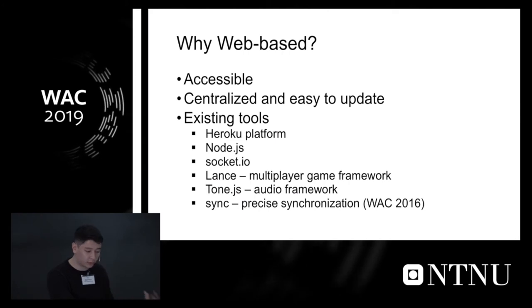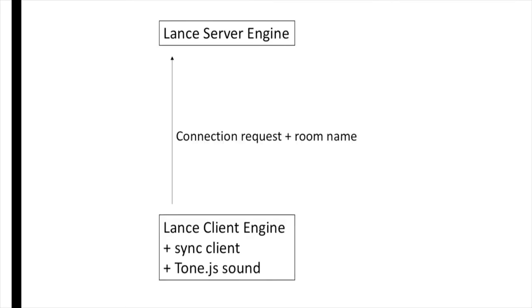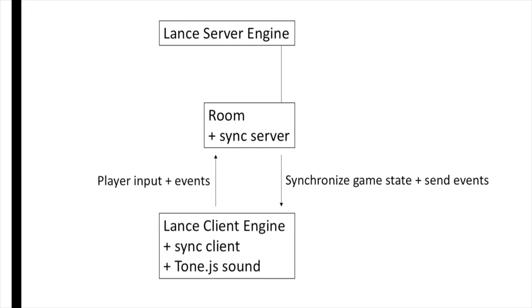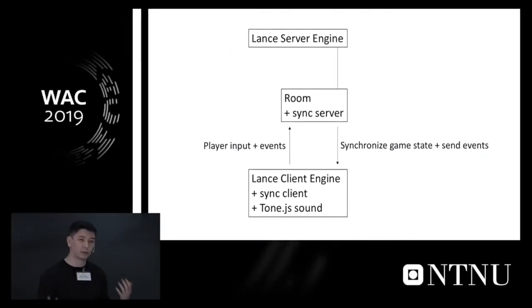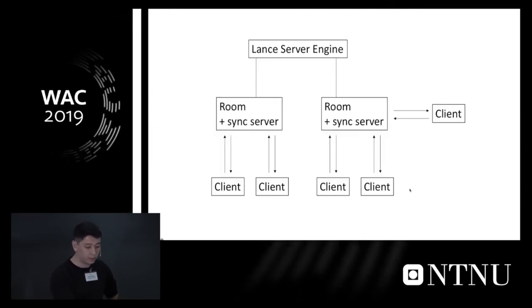The general architecture: a server engine runs constantly. A client — consisting of a sync client for the clock and a Tone.js sound engine — makes a request for a connection and a room name. The server creates a room and a sync server, so synchronization is strictly encapsulated to that room. The room sends back confirmation along with player and game info to the client. From there, the client continuously sends input and events to the server to be processed, and the server sends synchronized game state, events, and other player information back. With multiple rooms and players you end up with a layered network structure.